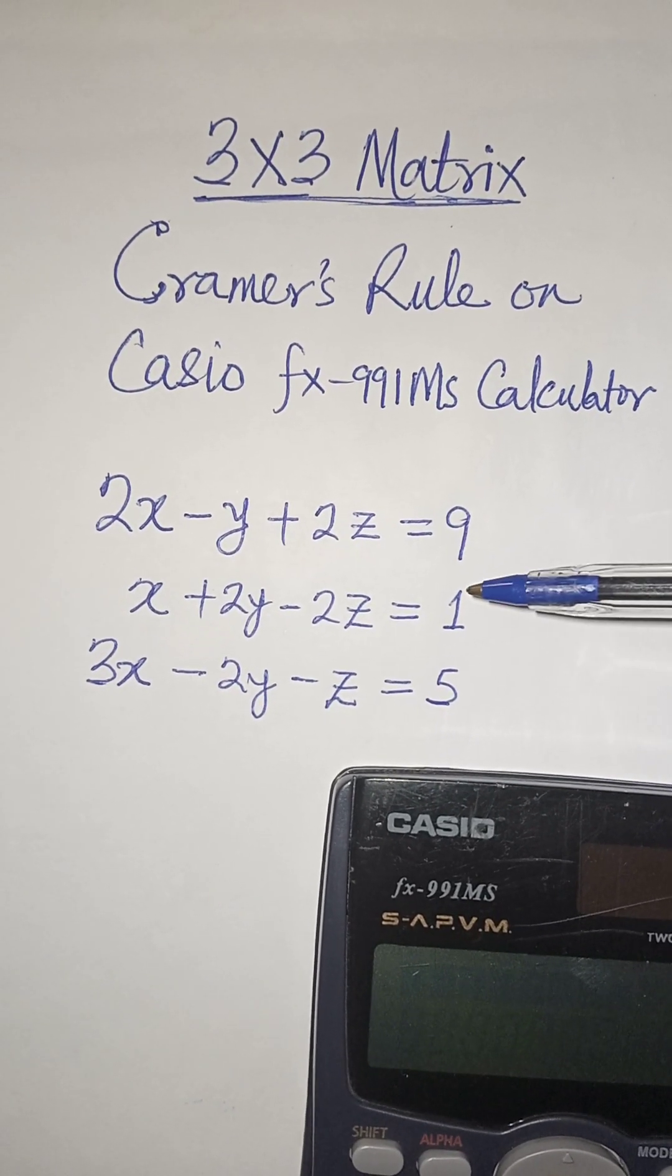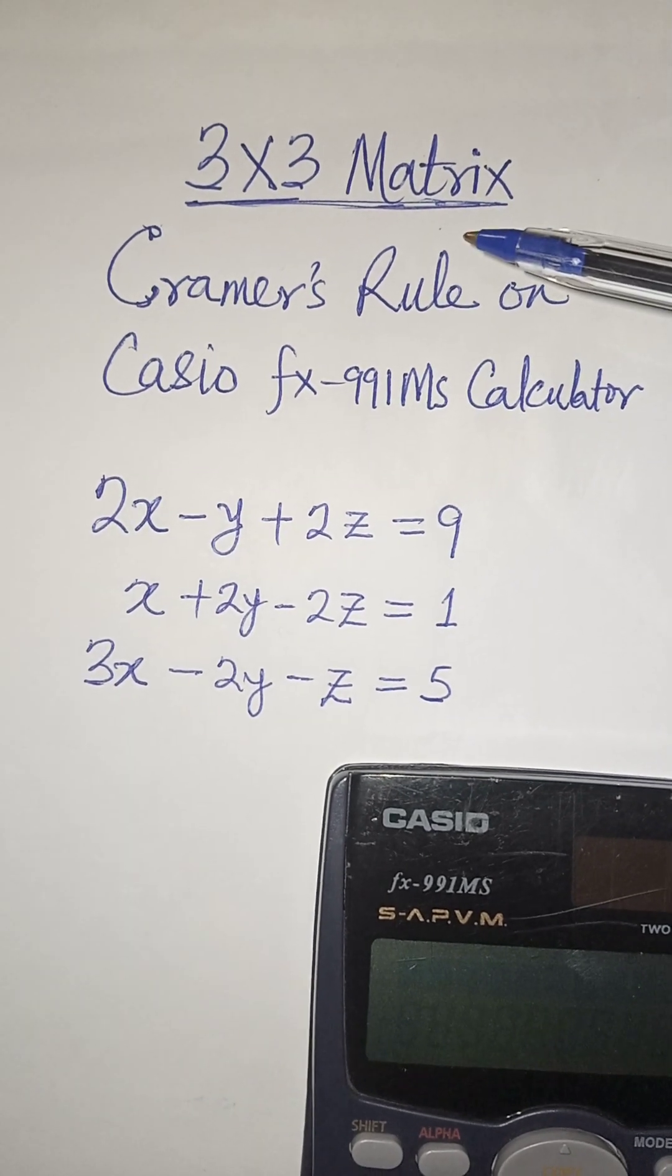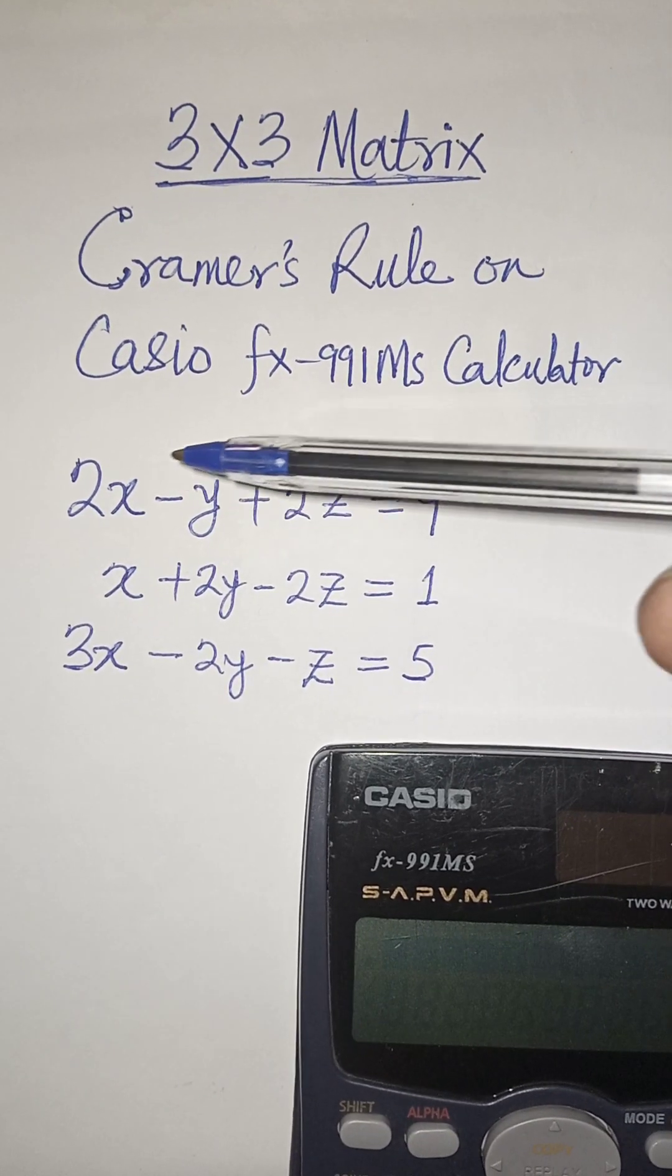And this should be equation 1, equation 2, equation 3. This is matrices. I want to use Cramer's rule to solve for x, y, and z.